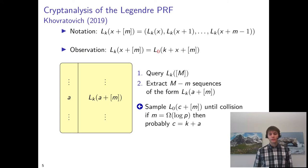The basic observation that's used in this birthday-bound attack is the fact that the Legendre PRF of an input x is the same as the Legendre PRF of k plus x, where the key is 0.